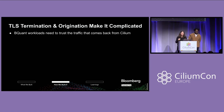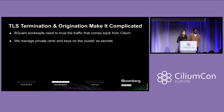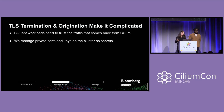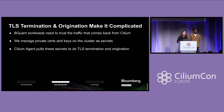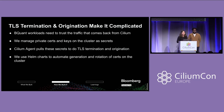TLS termination and origination make it a little bit more complicated. Our BQuant workloads need to trust the traffic that comes back from Cilium, which means we have to provide private certs and keys generated on the cluster, store them as secrets, and take the certificates generated by the root CA and append our certificates on that. The Cilium agent is actually pulling these secrets on the cluster to do the TLS termination and origination. We use Helm to automate the generation and rotation of those certs, which allowed us to have a fully comprehensive, secure solution.